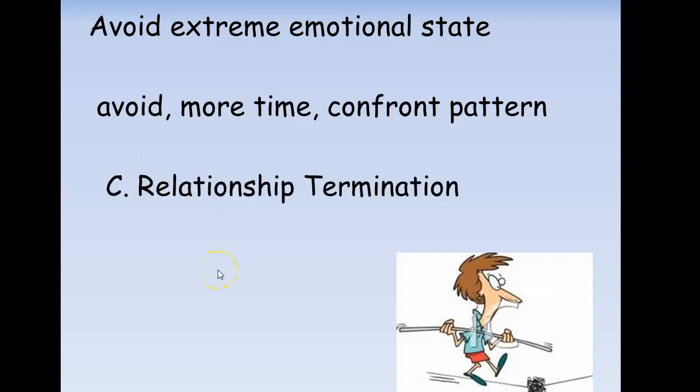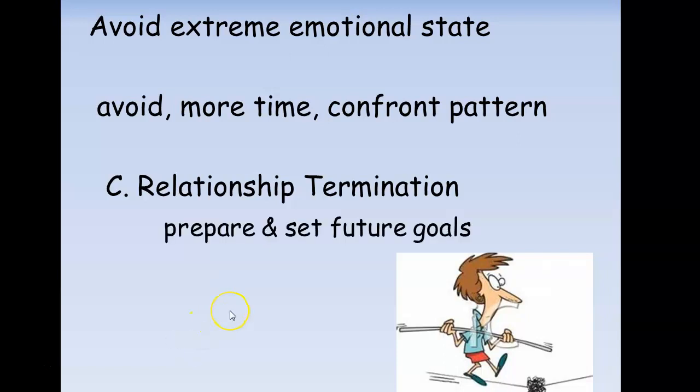The last type of termination is termination of the actual relationship you have with the client. I mentioned in class to think about a voluntary relationship — a friend or someone close to you — that you've actually ended voluntarily in a positive way where everybody feels good about it. It really doesn't happen in real life very often, but in a counseling relationship, we really want to try and make that happen. In this session, usually the last session, we prepare the client and help set future goals for them.